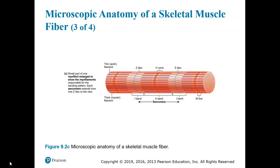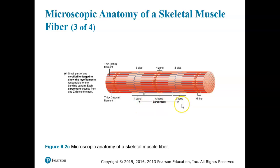In the last slide, we talked about how a sarcomere is a contracting unit of a muscle fiber, and it is literally the area of the myofibril between one Z-disc and another Z-disc. So from Z-disc to Z-disc, that is one sarcomere, and each sarcomere has an I-band on each side and an A-band in the middle.